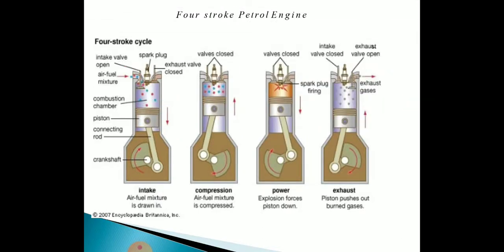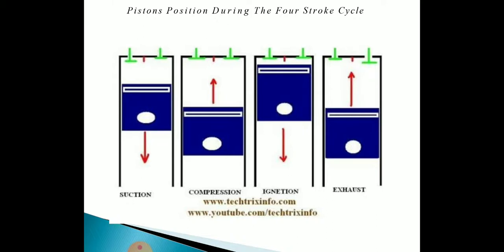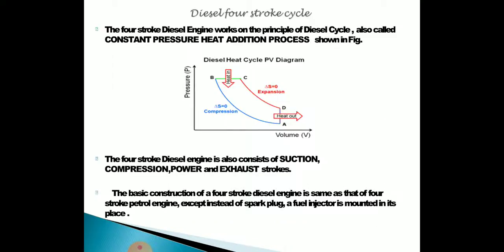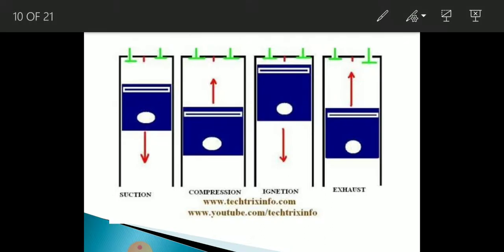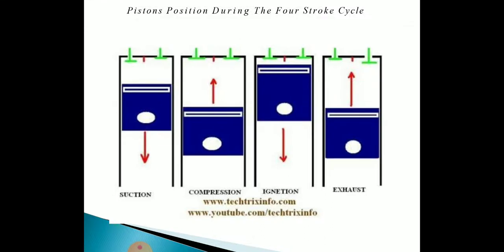To summarize: in the first stroke the piston moves downward; in the second stroke it moves upward and compresses the air-fuel mixture; in the third stroke the burning gases force the piston downward producing work; and in the fourth stroke the piston moves upward again throwing exhaust gases to the atmosphere. I hope this lecture on the four-stroke engine is clear. In the next video we will discuss the two-stroke engine. Thank you.